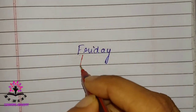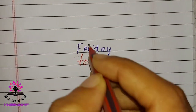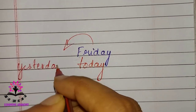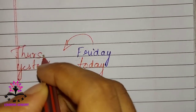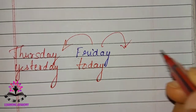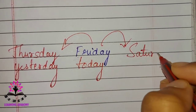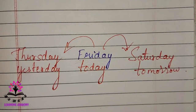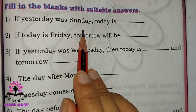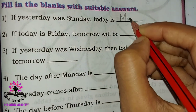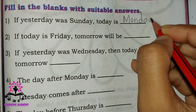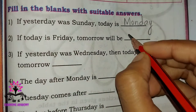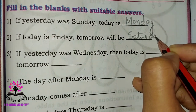If today is Friday, the day before Friday is yesterday — which is Thursday. And the day after Friday is Saturday — that is tomorrow. If yesterday was Sunday, today is Monday. If today is Friday, tomorrow will be Saturday.